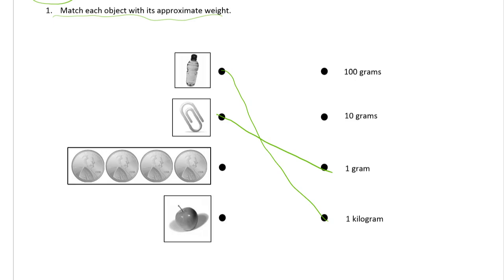The next lightest thing would be these four pennies. The apple would weigh more than the four pennies. So between 10 grams or 100 grams, the pennies are going to be lighter than the apple. So we'll give the pennies 10 grams and we'll give the apple 100 grams.